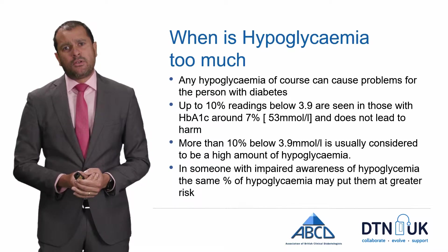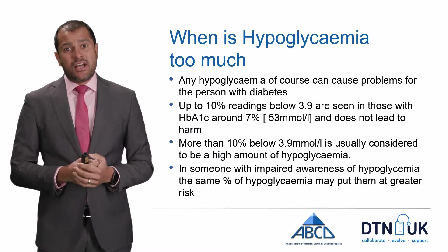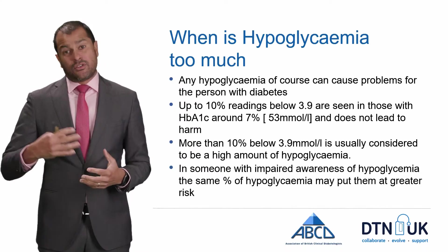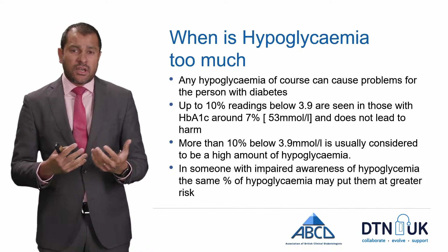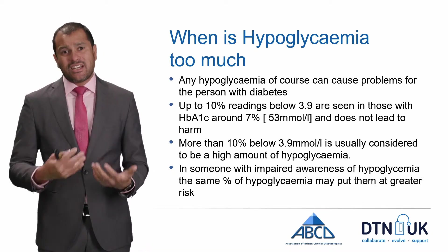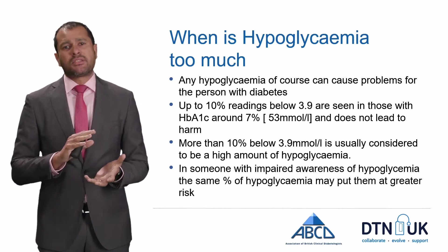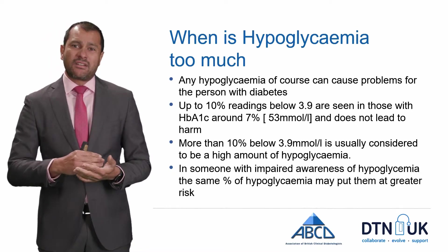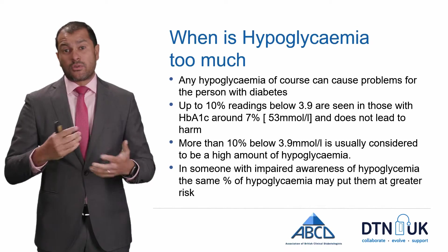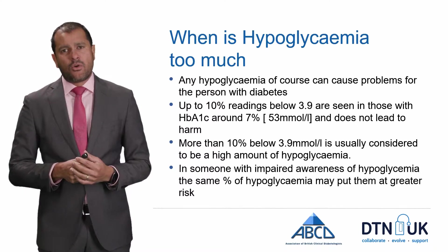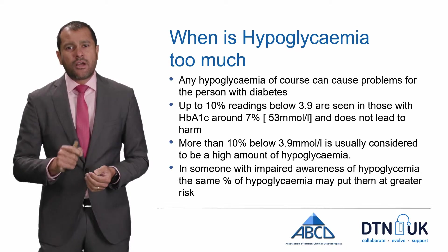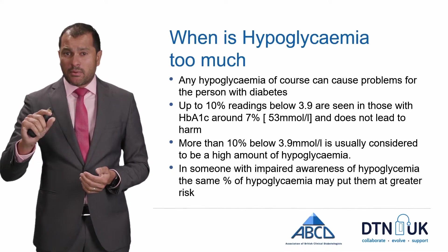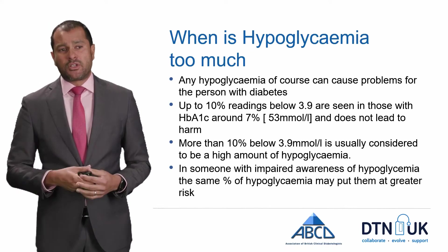Most people with really good diabetes control — an HbA1c of 7% and good warning signs of hypo — have between 5 and 8% of readings below four, and generally less than 5% below three. That's the dangerous level where you can get some confusion. We must also remember that if you have impaired awareness of hypoglycemia, the same amount of hypoglycemia — that 5 to 10% — may put you at much greater risk.